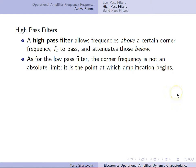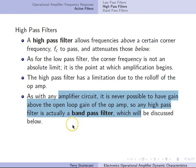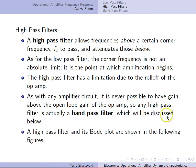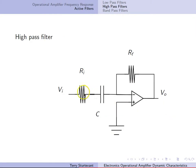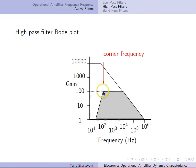A high-pass filter allows frequencies above a certain corner frequency to pass and attenuates those below. Just like the low-pass filter, the corner frequency is not an absolute limit — it's the point at which amplification begins. The high-pass filter has a limitation due to the roll-off of the op-amp itself. It's never possible to have gain above the open-loop gain of the op-amp, so any high-pass filter is actually a band-pass filter. The circuit is an inverting amplifier with a capacitor in series with the input resistor. At low frequencies the capacitor is essentially an open circuit, so no signal passes. At high frequencies the capacitor becomes like a wire, and this becomes a normal inverting amplifier — until the open-loop gain roll-off is reached.